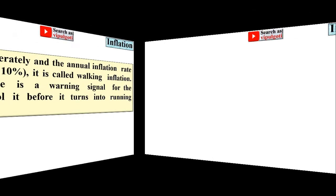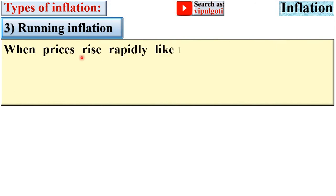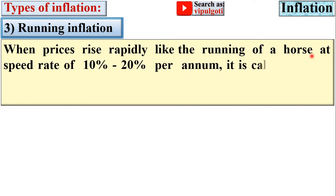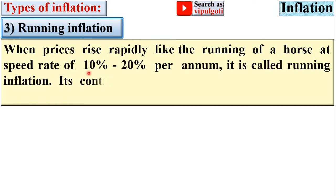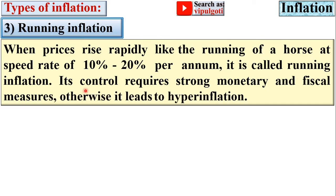Running inflation occurs when prices rise rapidly, like the running of a horse, at a speed rate of 10% to 20% per annum. Its control requires strong monetary and fiscal measures; otherwise it leads to hyperinflation.